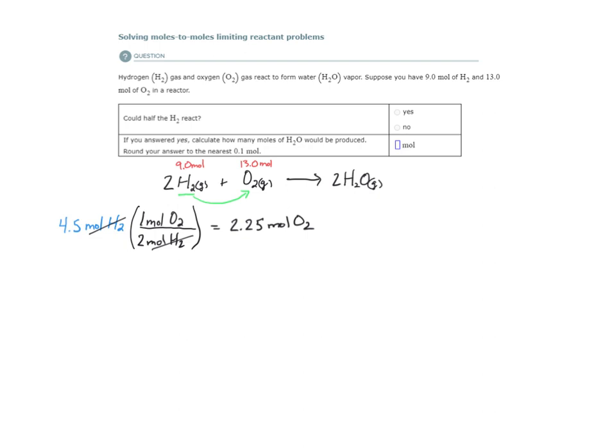So the question was, could half of the H2 react given these amounts? Well what's half of the amount of H2 that we have? We have 9 moles. Half is 4.5 moles. So we did a little bit of stoichiometry here. And we determined that if I want all of this 4.5 moles of H2 to react, which is half of what we have to begin with, I need 2.25 moles of O2. If I have 2.25 moles of O2, I can use up all of these 4.5 moles of H2.